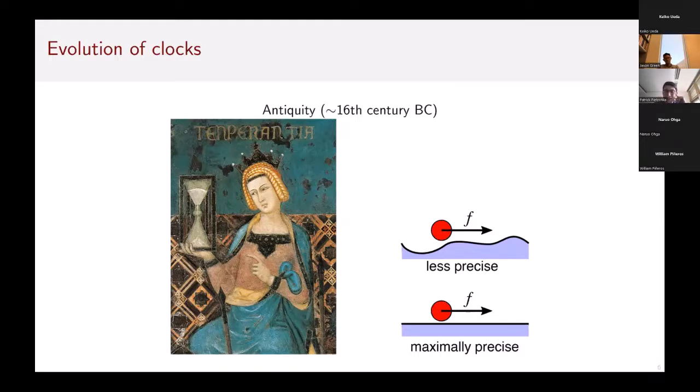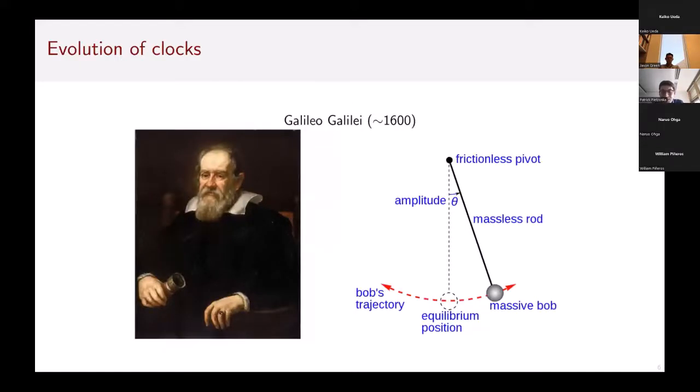It took several centuries until there was an important new concept entering the business of designing clocks. That is due to Galileo, who was the first to realize that the period of a pendulum is independent of its amplitude. That might make it a good candidate to operate a clock, because if it gets some bump from the surrounding environment, it might just increase its amplitude but not change its period.